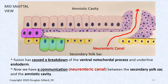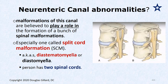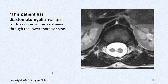Diastematomyelia — also called diastemomyelia — is a split spinal cord. Most people have one spinal cord; these people have a split cord and can have syrinxes and all kinds of neurological problems. On MRI, the axial image looks very strange — where there should be one normal spinal cord with CSF around it on a T2-weighted image, you see a split structure. It's quite strange.